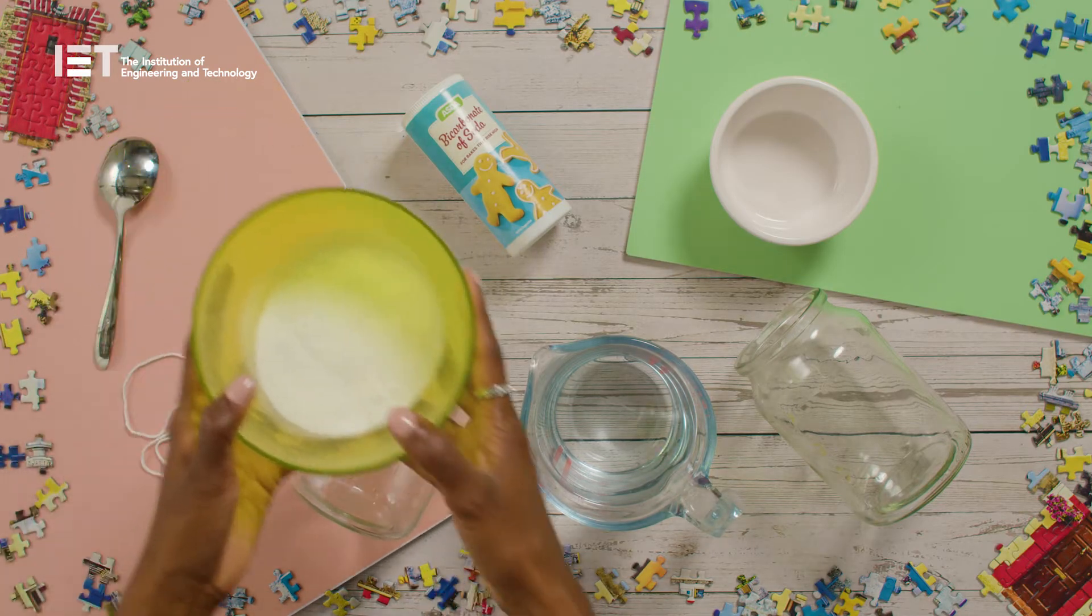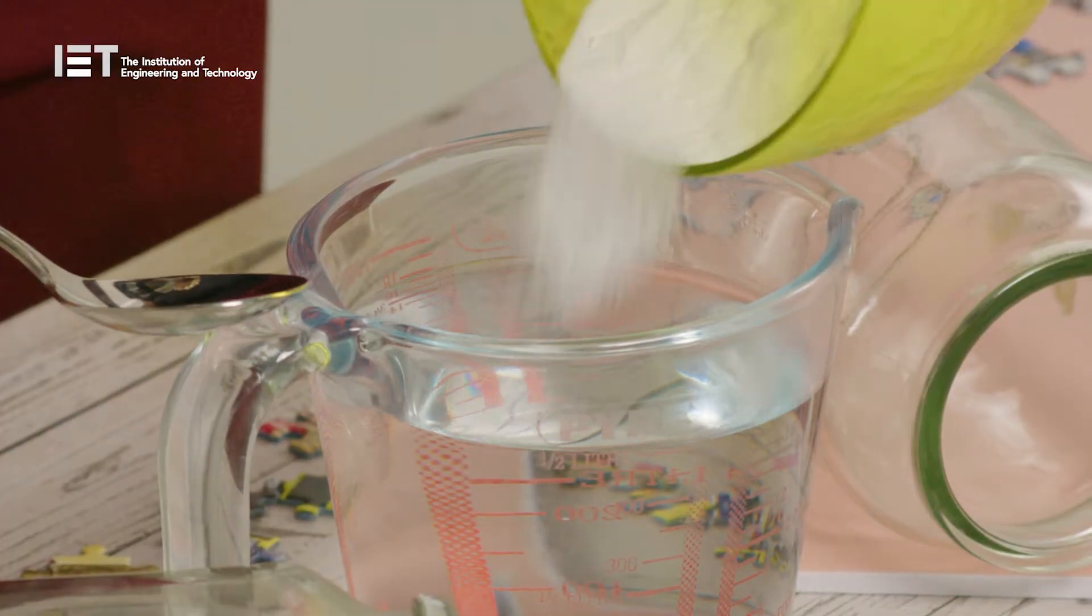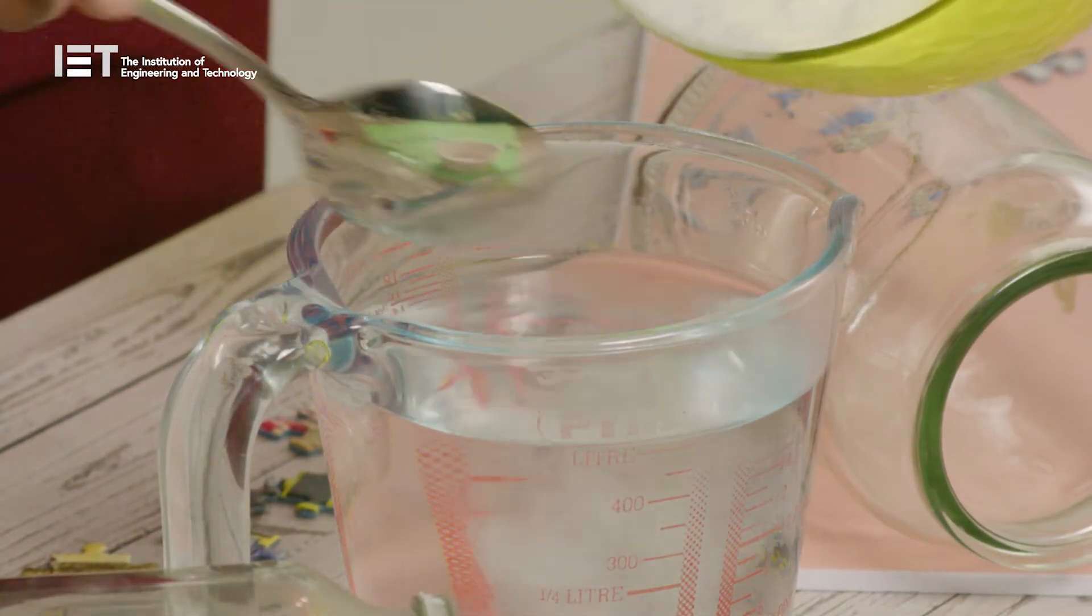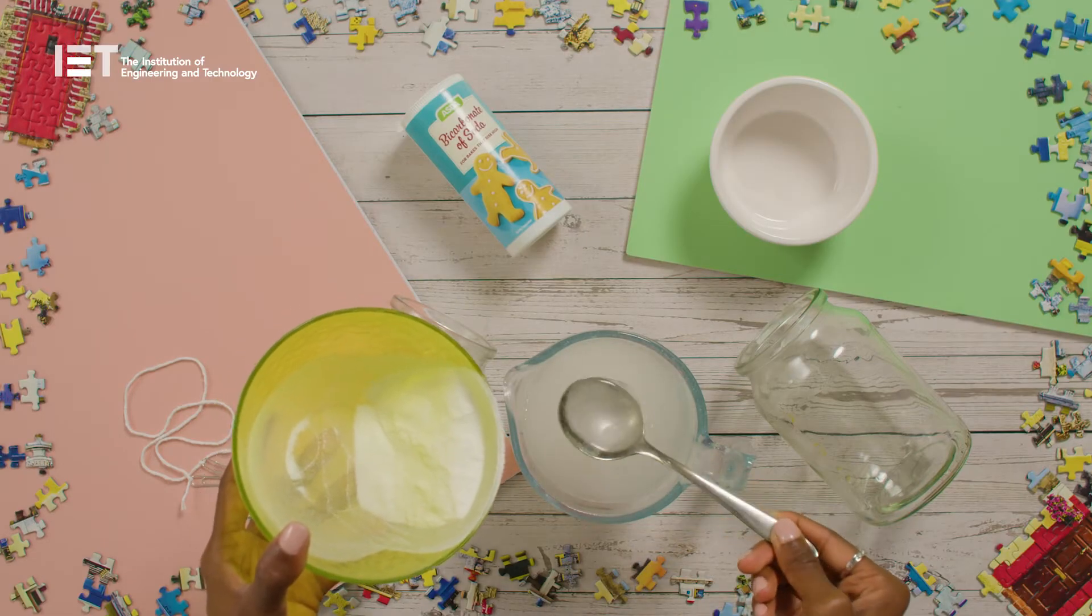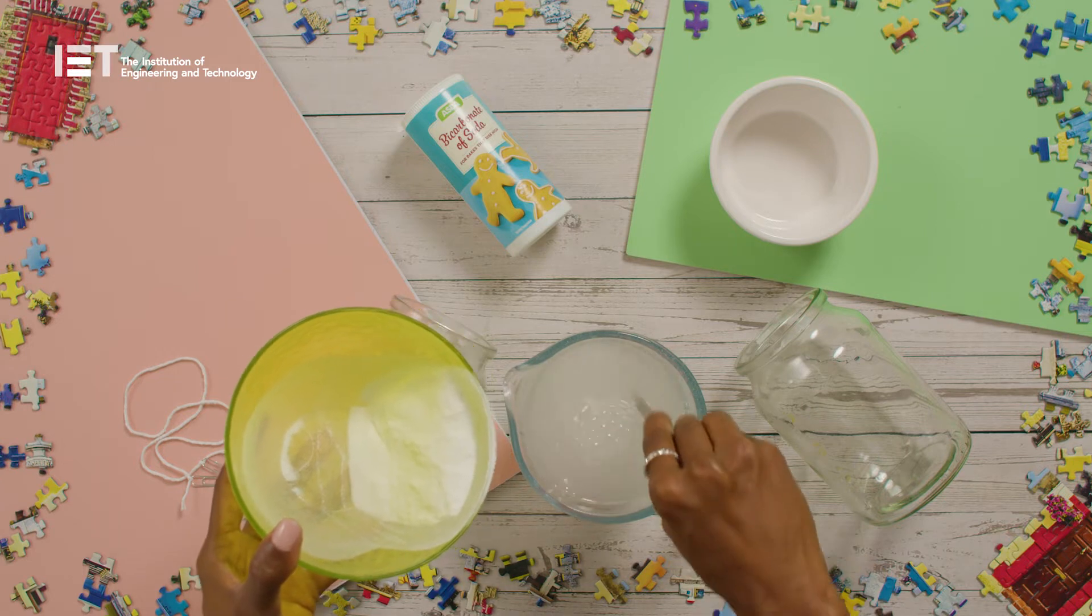First, make a saturated solution of bicarbonate of soda. You'll need to start with two jars filled with water. Keep adding bicarbonate of soda to the water until it stops dissolving.